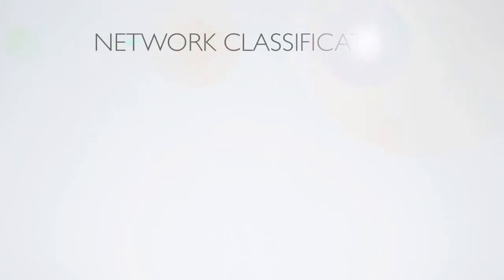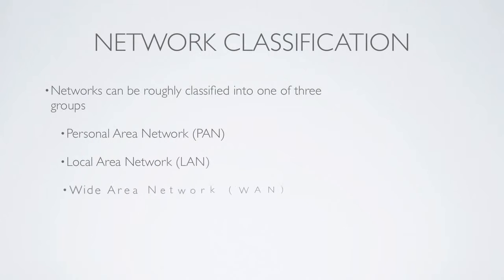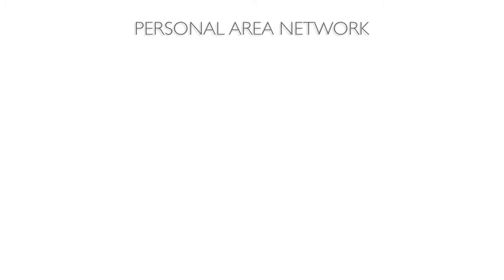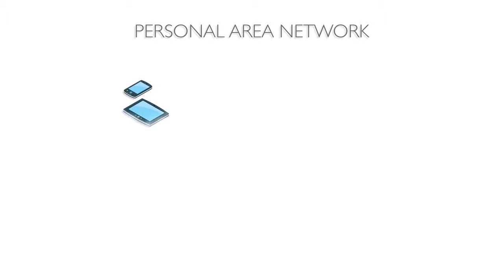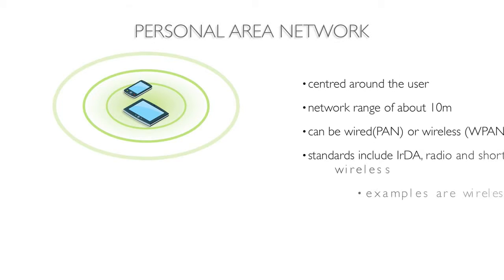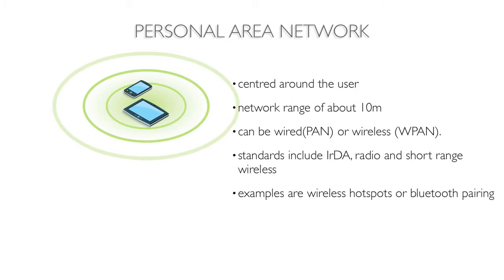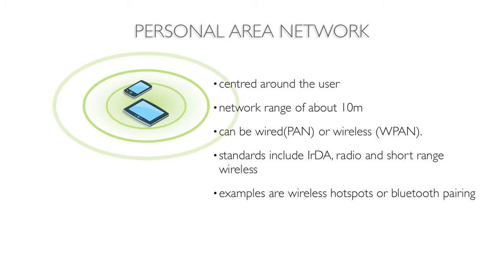Networks can be classified into one of three groups: personal area networks, local area networks, and wide area networks. A personal area network is used for communication among computer devices and peripherals in proximity to an individual's body, but may not belong to the person in question. These types of networks often use a single transmission media to pair the devices in the network over a 10 meter range.